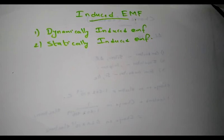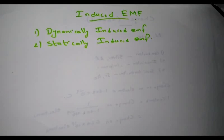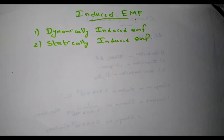Good evening. Let's go through the induced EMF from Faraday's Law. We learned how an EMF can be induced in a coil. EMF can be induced in two ways and based on that it is classified into dynamically induced EMF and statically induced EMF. The primary requirement for EMF induction is given by Faraday's first law — whenever there is a change in magnetic flux linking with a coil or conductor, an EMF is induced. This change can be achieved either by using a stationary conductor in a varying magnetic field, or a moving conductor in a constant magnetic field. This is the basis for classification into dynamically and statically induced EMF.